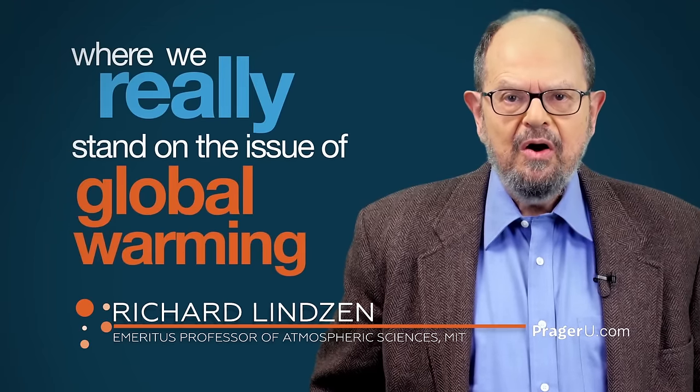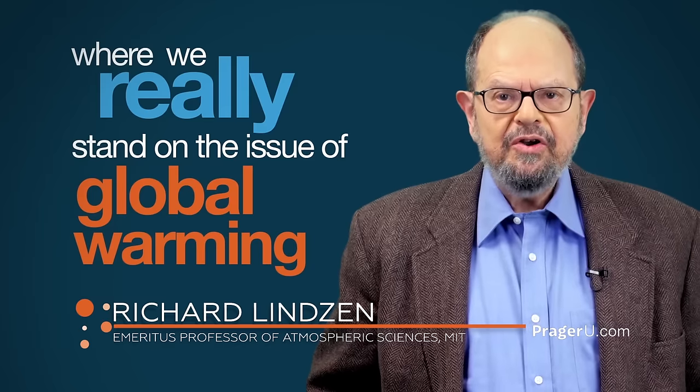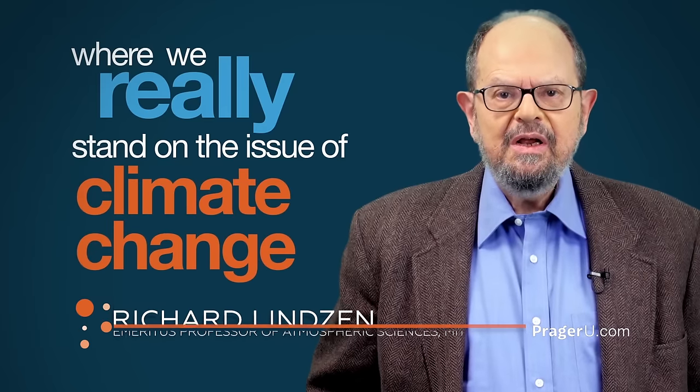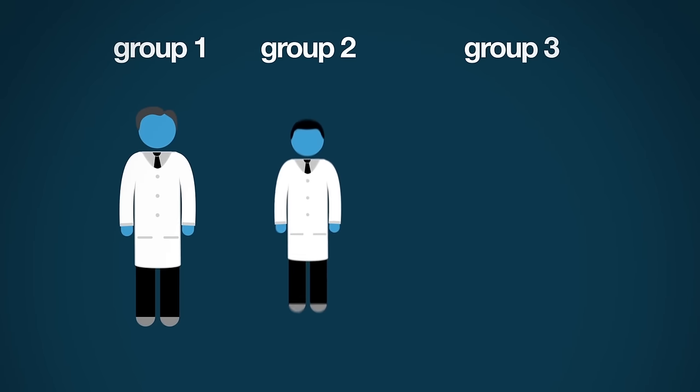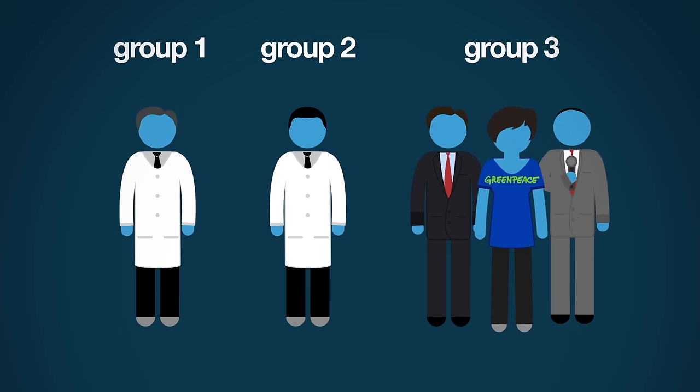So let's clear the air and create a more accurate picture of where we really stand on the issue of global warming, or as it is now called, climate change. There are basically three groups of people dealing with this issue. Groups one and two are scientists. Group three consists mostly at its core of politicians, environmentalists, and media.